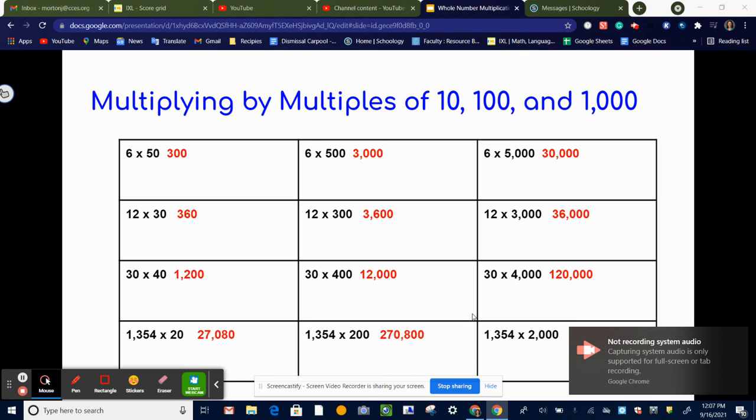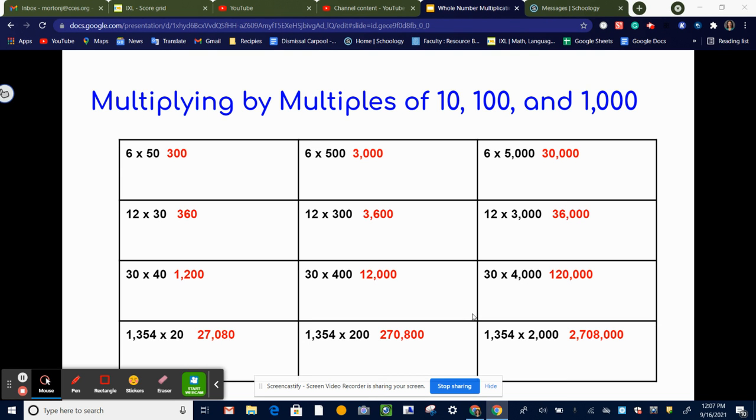In this video, we're going to learn how to multiply by numbers that end in zero. So here we have 6 times 50. We're just going to multiply the non-zero numbers, which in this case is 6 and 5, and we get 30, and then we're just going to add on one more zero.